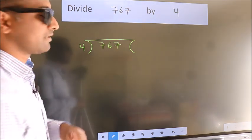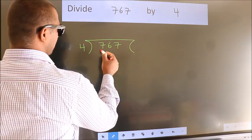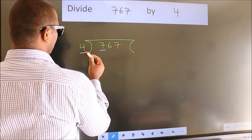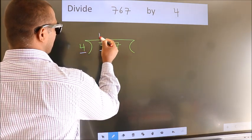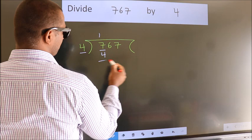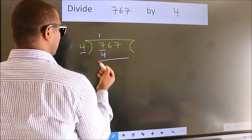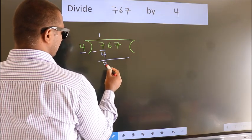Next, here we have 7, here 4. A number close to 7 in the 4 table is 4 once 4. Now we should subtract. We get 3.